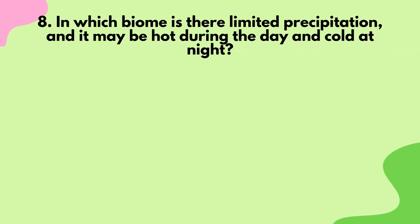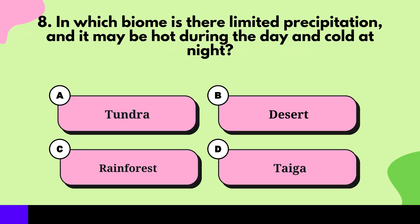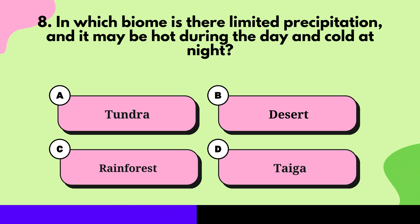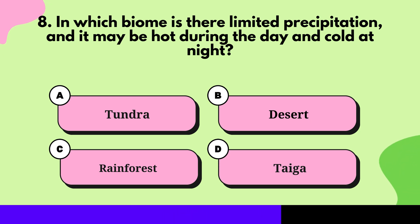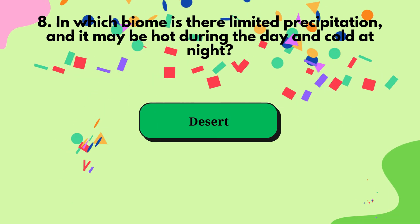In which biome is there limited precipitation and it may be hot during the day and cold at night? Desert.